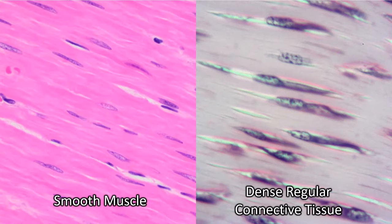However, what you should think about is that smooth muscle is entirely made of living cells, whereas dense regular connective tissue is made of some living cells called fibroblasts that are sandwiched in between the collagen fibers.